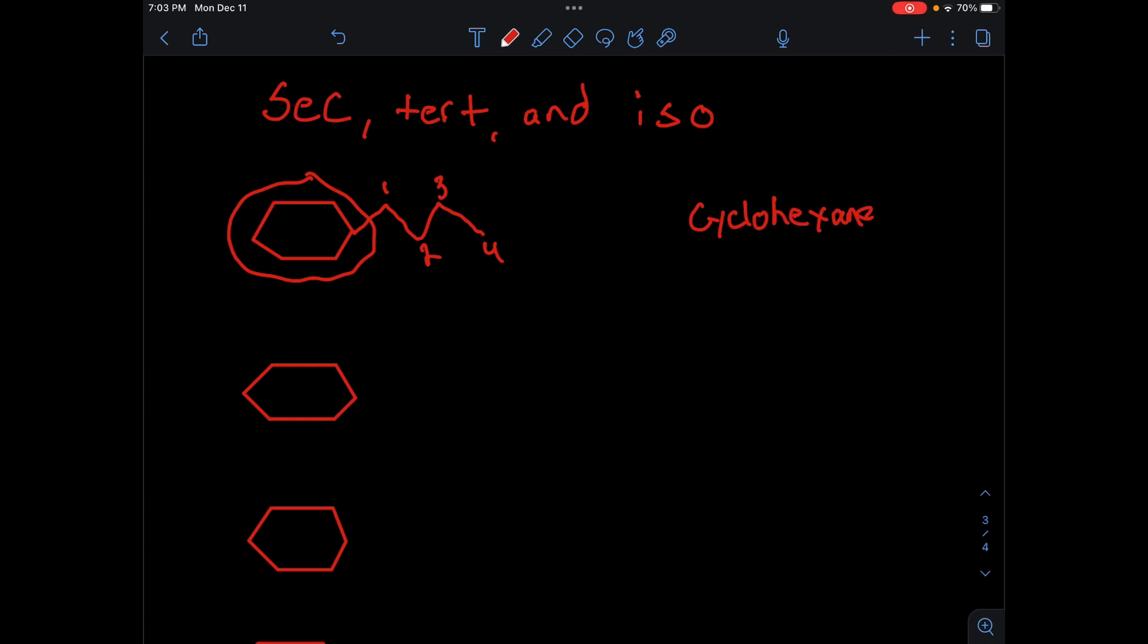You may ask why don't you call it 1-butyl cyclohexane? You can do that, but it's kind of redundant if it's the only substituent on the ring. So really this is unnecessary because you don't have any other substituents. Any of these carbons here could be the one group, so it's just butyl cyclohexane.